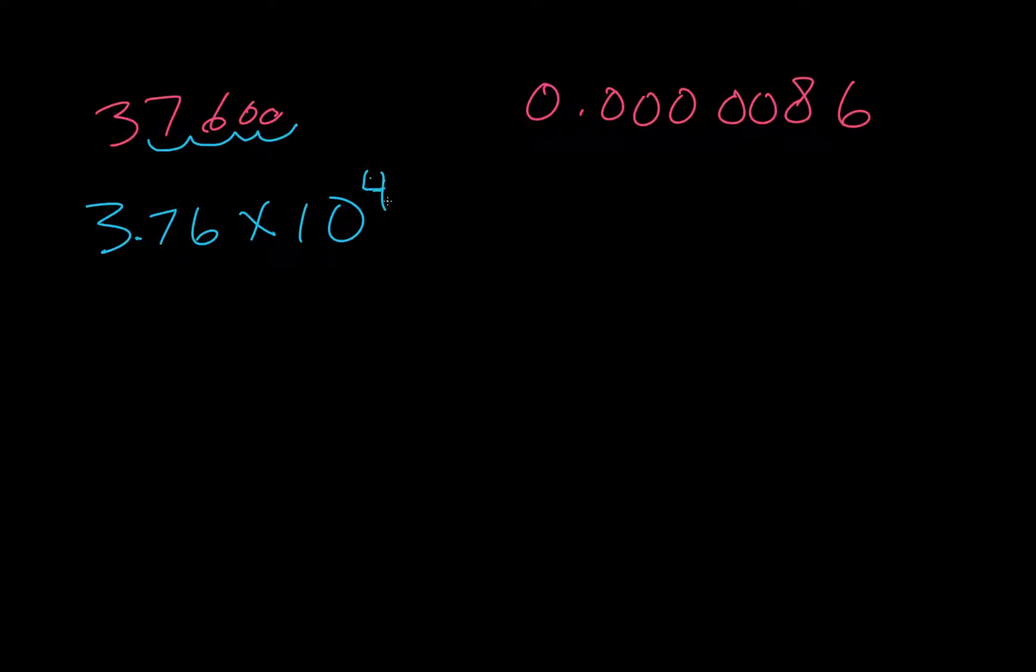The way that we know if this is positive or negative is: does this number need to be boosted to get to this number, or does it need to be reduced? Since 3.76 is smaller than 37,600, it needs to get boosted, so it's a positive exponent.